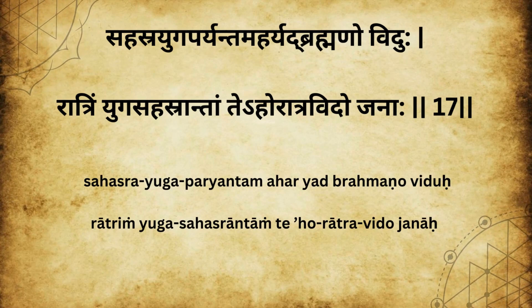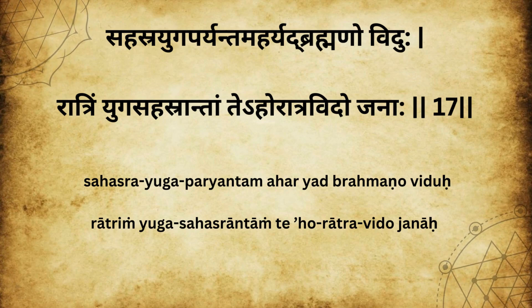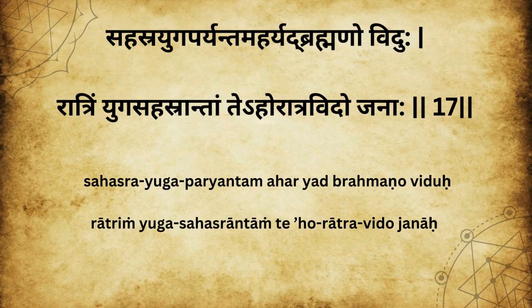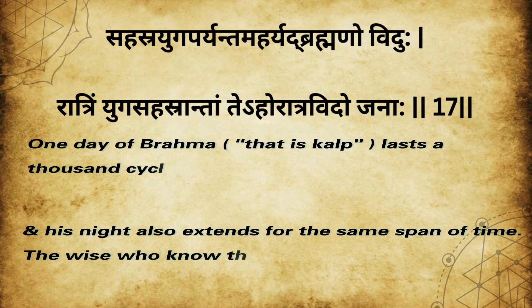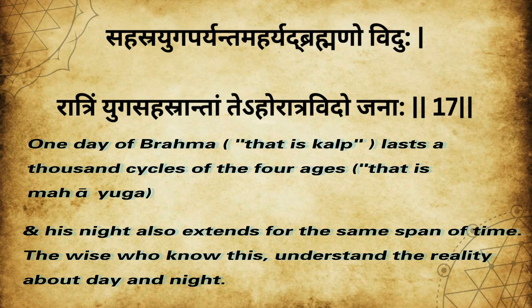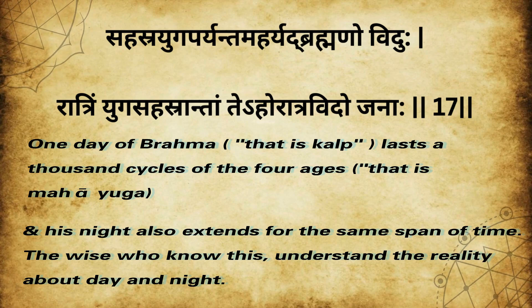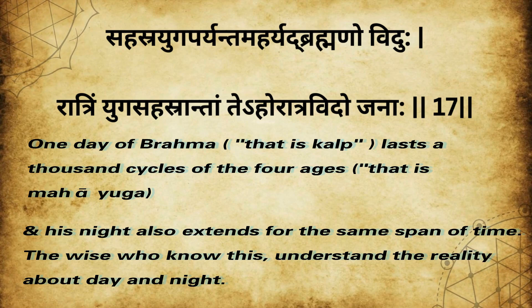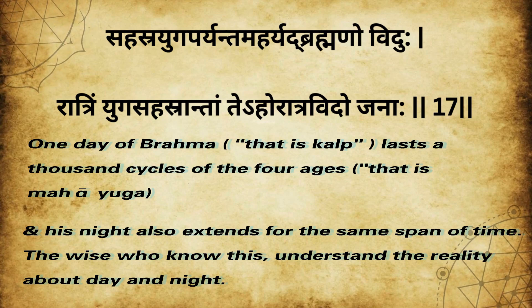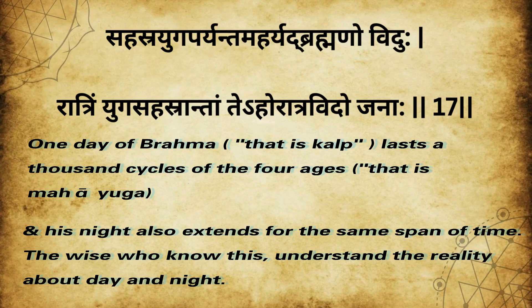For the time being, I will only quote what it says. Sahasar Yuga Pariyantham Aharyat Brahmano Vidhu Rhyatrim Yuga Sahasrantham Teho Rhyatra Vidho Janaha. It means, one day of Brahma, that is Kalp, lasts a thousand cycles of four ages, that is Mahayuga. And his night also extends the same span of time. The wise who knows this understands the reality about day and night.